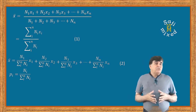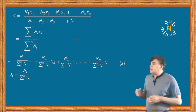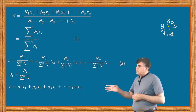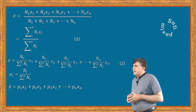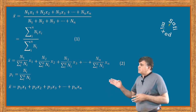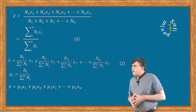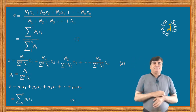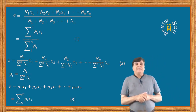With this notation, equation 2 becomes x-bar equals p1 times x1 plus p2 times x2, and so on, which can be expressed compactly as the sum over i of p sub i times x sub i. Thus the average value of position x is the weighted average of several measurements.